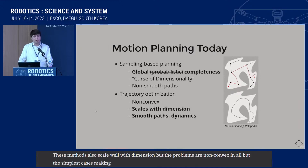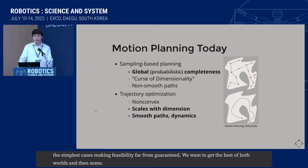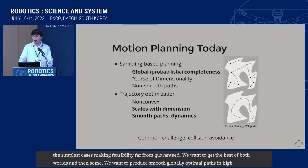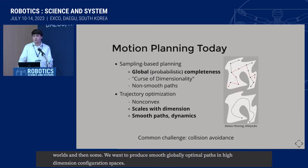We want to get the best of both worlds, and then some. We want to produce smooth, globally optimal paths in high-dimensional configuration spaces. To tackle this problem, we turn our attention to a common challenge for both methods: collision avoidance.